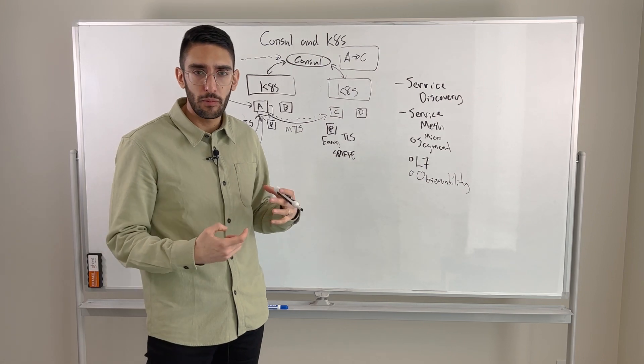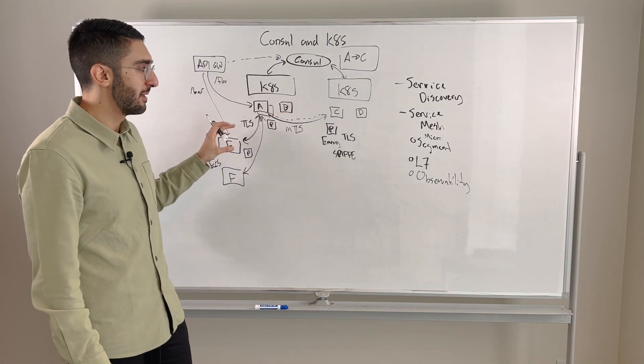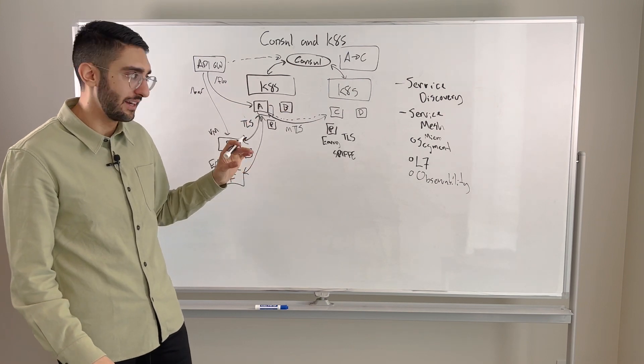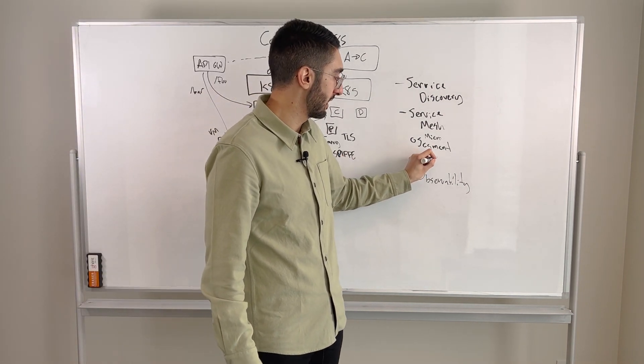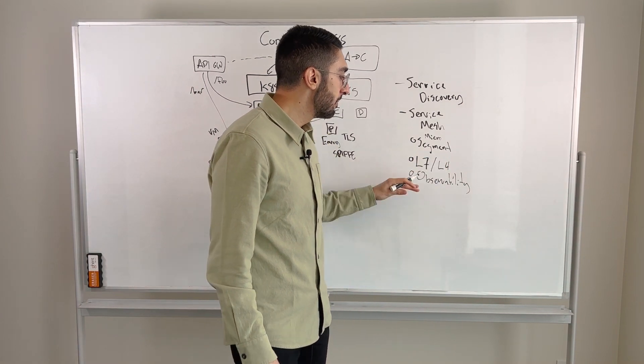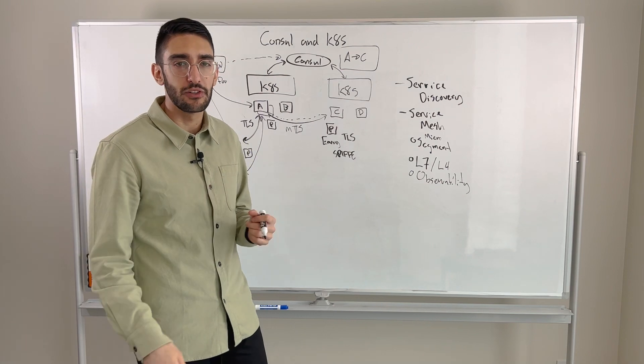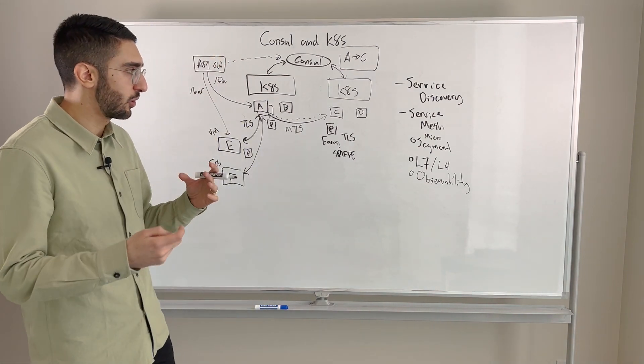So these become some of the really core benefits as we talk about service mesh, is really thinking about the security improvements, the manageability around layer 4 and layer 7. Obviously we don't have to only work at layer 7, we can also do layer 4 policies. And then observability, can we actually see it and profile our network and get a better sense of what's actually happening? Those are some of the core values.